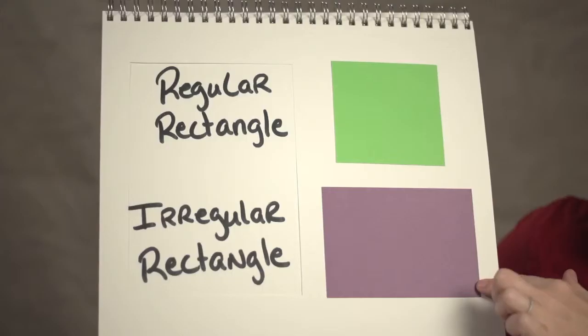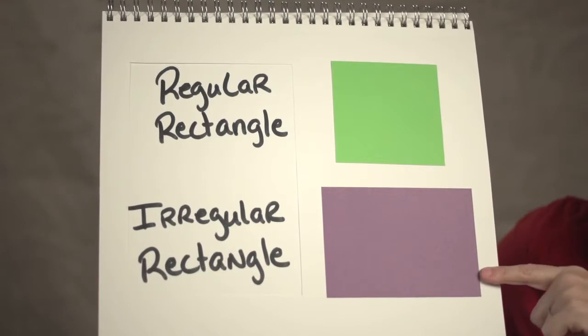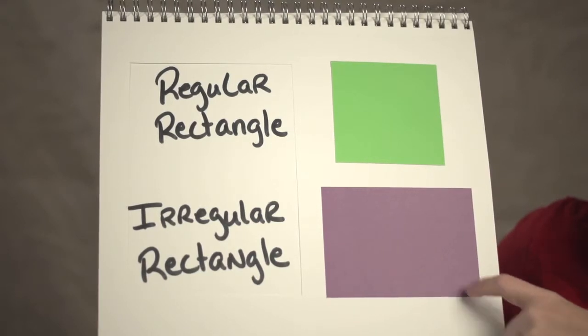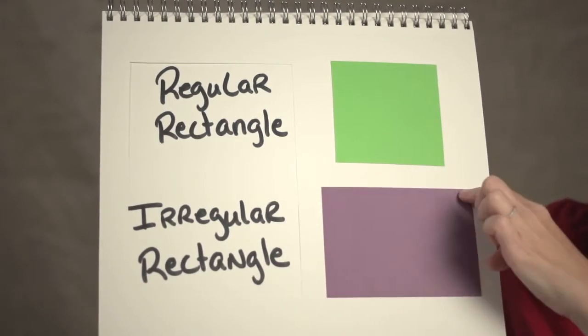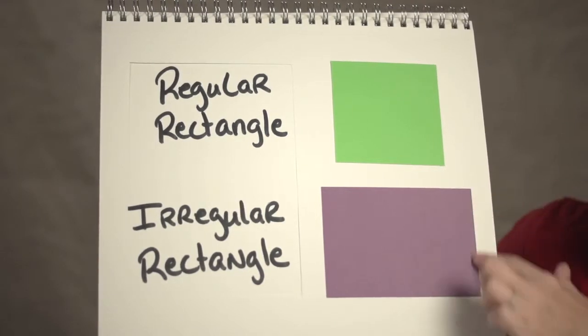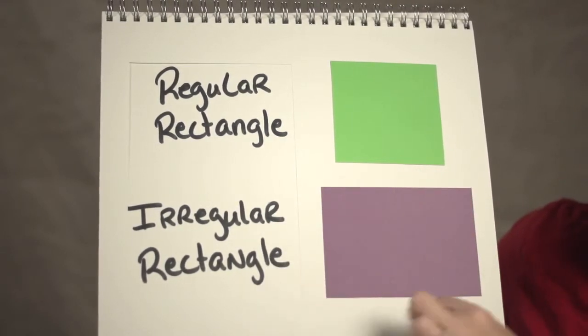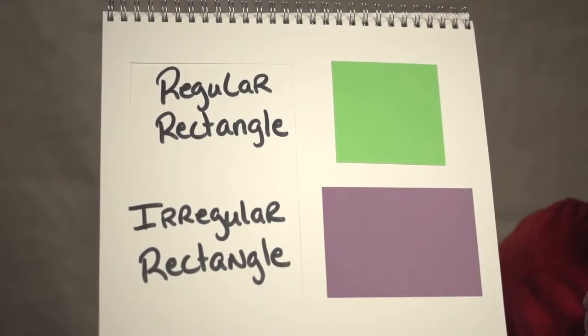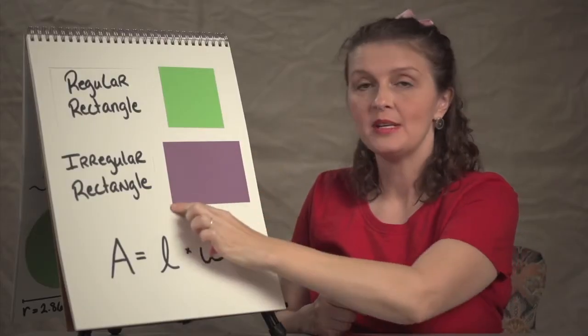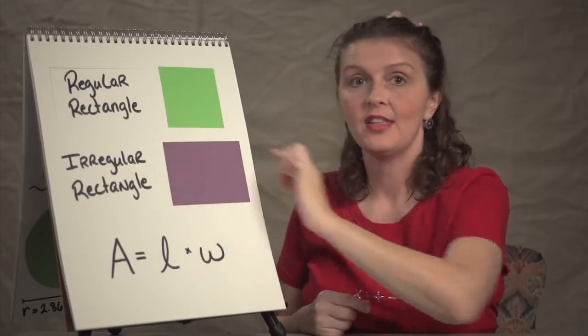And an irregular rectangle or an irregular shape at all means the sides or at least one of them is a different length. Since the rectangle has to have four 90 degree angles, it means that these two have to be at least different than these two.